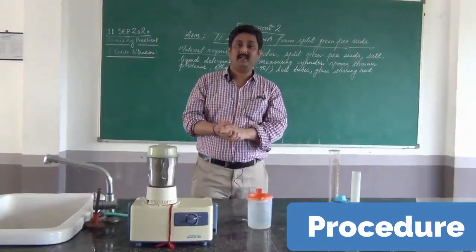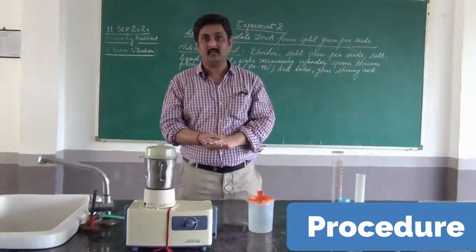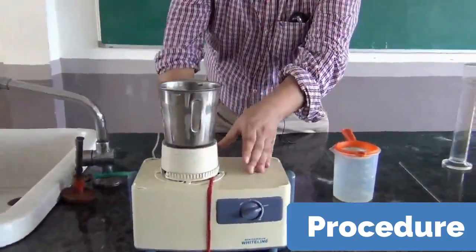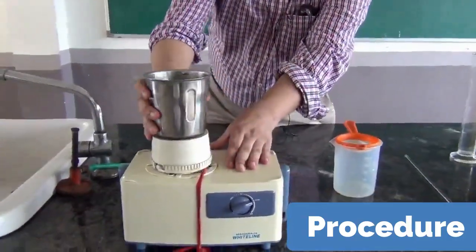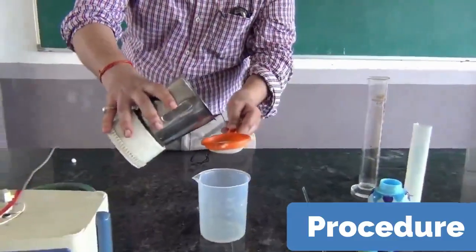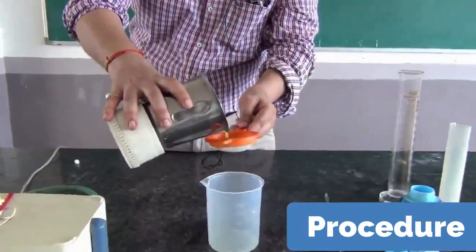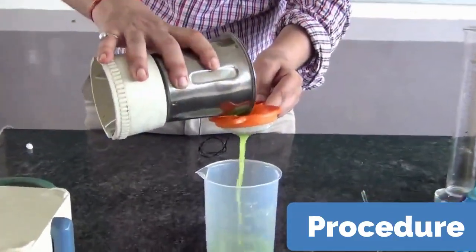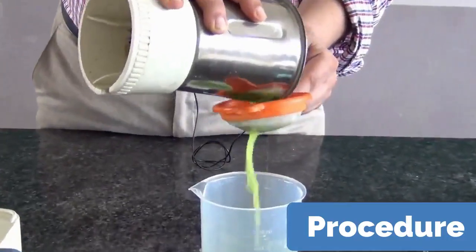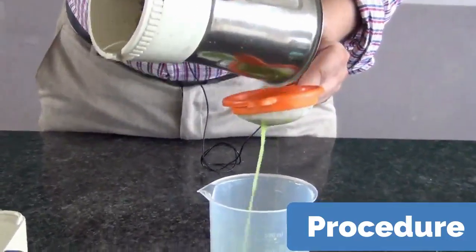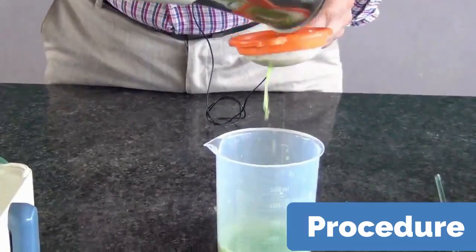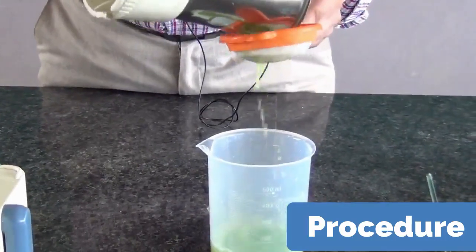After grinding it for about 10 to 15 seconds, we are going to pour this and filter it with the help of a strainer into a beaker. The content is approximately 100 ml.